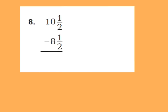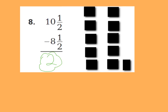Number 8 says 10 and 1 half minus 8 and 1 half. Let's subtract our fraction parts first: 1 half minus 1 half is 0 halves. You don't have to write 0 halves — just keep it blank. Then our whole numbers: 10 minus 8 is 2. So 10 and 1 half minus 8 and 1 half is just 2. Here's why: if I have 10 wholes and I take away 8 wholes, and I have a half and take away a half, I would have 2 wholes left over.